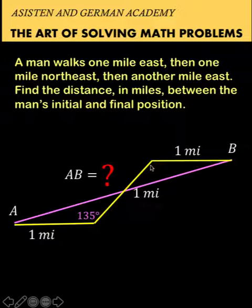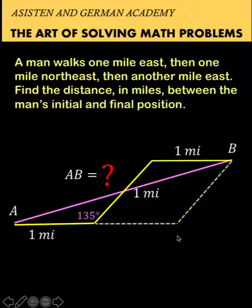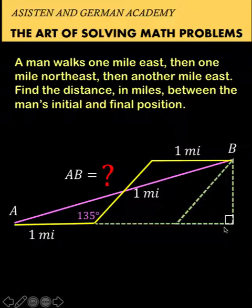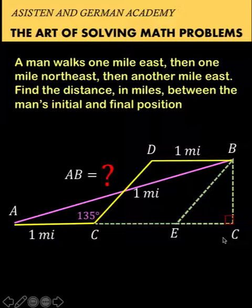Let's begin by constructing a line segment parallel to this segment and another line segment parallel to this horizontal segment here. The resulting figure here is a rhombus. Then let's construct this right triangle and label the parts.